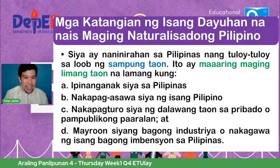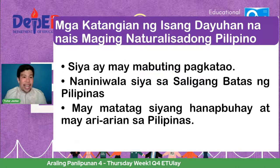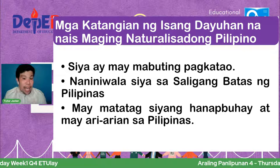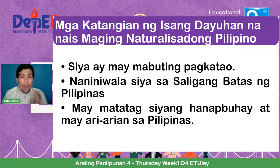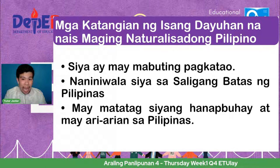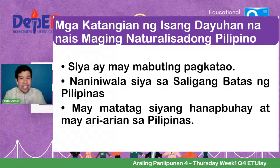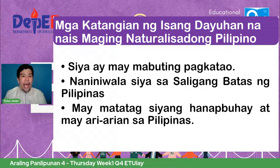Ito pa ang mga katangian ng dayuhang nais maging naturalisadong Pilipino: siya ay may mabuting pagkatao, inaasahan iyan dahil tayong mga Pilipino ay likas na mabuti ang pagkatao. Naniniwala din siya sa saligang batas ng ating Pilipinas at isinasabuhay ito. At mayroon din siyang hanapbuhay at ari-arian sa ating bansang Pilipinas.